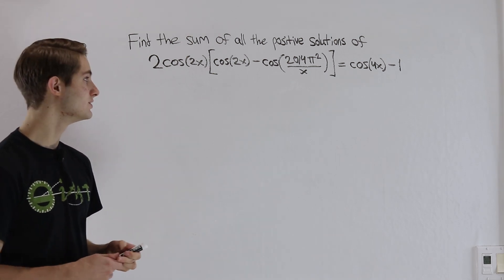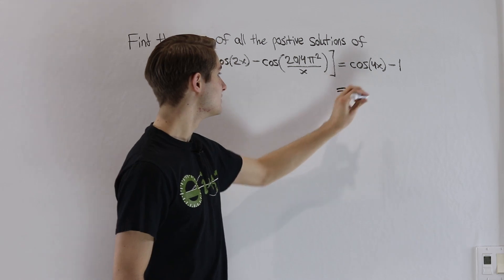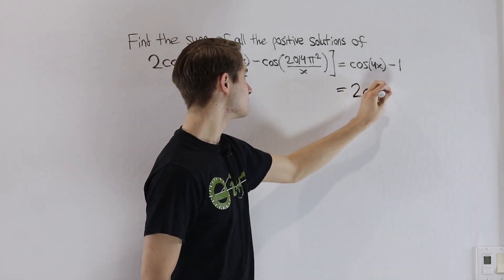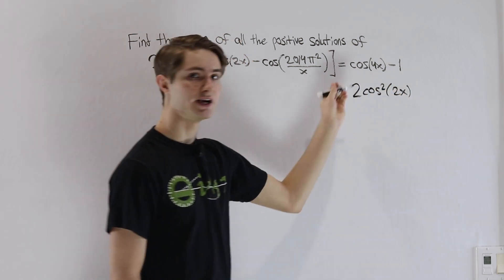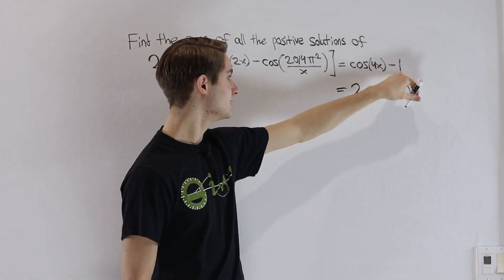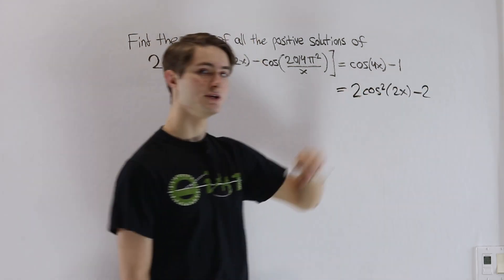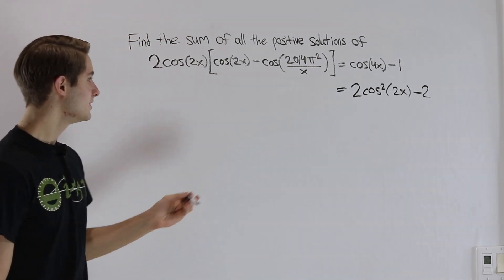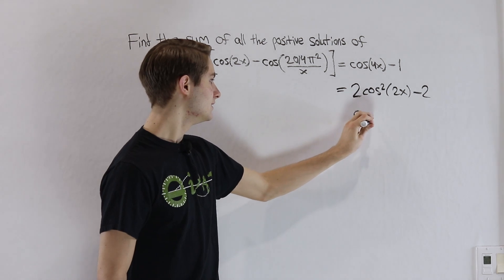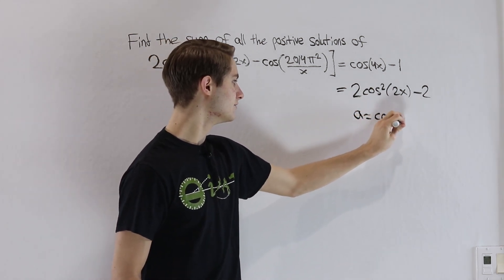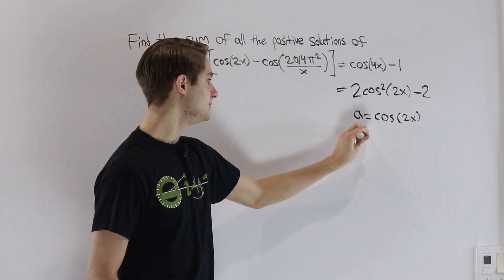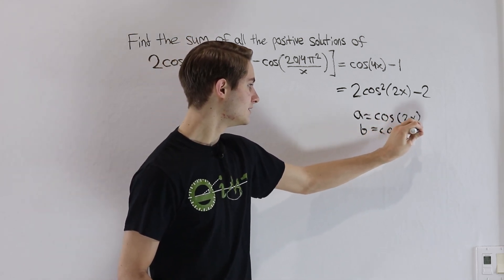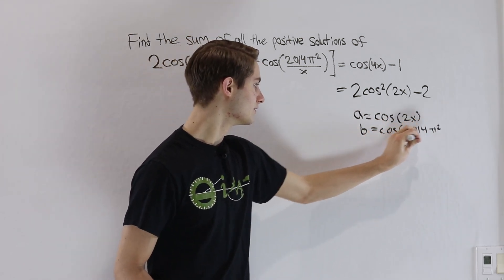Luckily we can because the double angle identity means that cosine of 4x is the same as 2 cosine squared of 2x minus 1. If we have a minus 1 and then minus another one, that'll be minus 2. To simplify the algebra here, I'm going to let A equal cosine of 2x and then B equal cosine of 2014π squared over x.